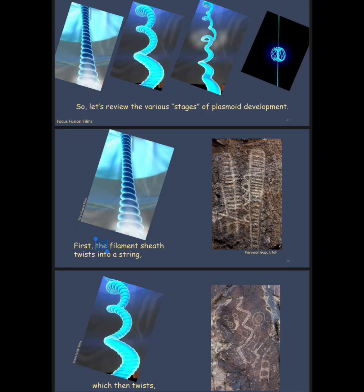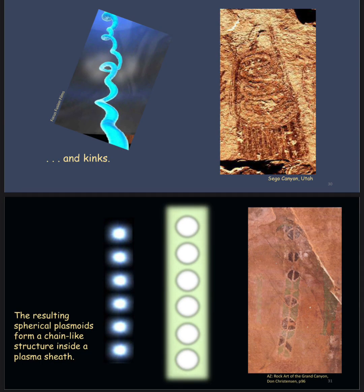If we look at the various stages of plasmoid development, first the filament sheath twists into a string, and on the right you see a petroglyph that looks exactly like that. What else could they be depicting? They had to see something crazy in the air based on all this evidence and the research of Anthony Peratt. Then it twists further and there's an exact petroglyph that matches that too. The toroids that form during plasma development max out at nine spheres — there are never more than nine. Sometimes they're seen with a few less, but they always max out at nine, and you'll see these little toroids or balls depicted in many petroglyphs.